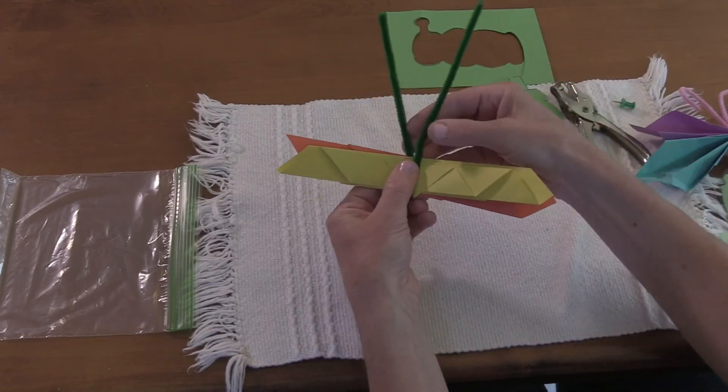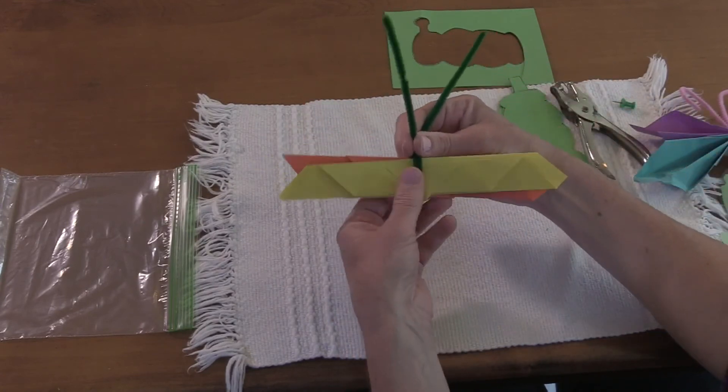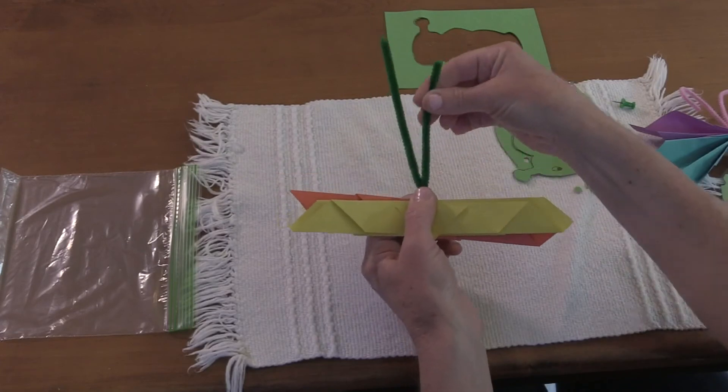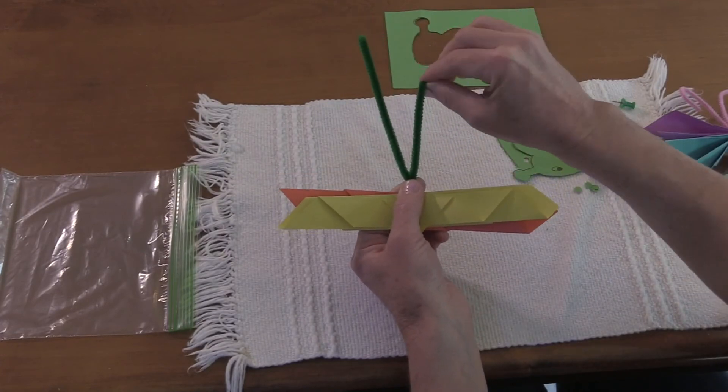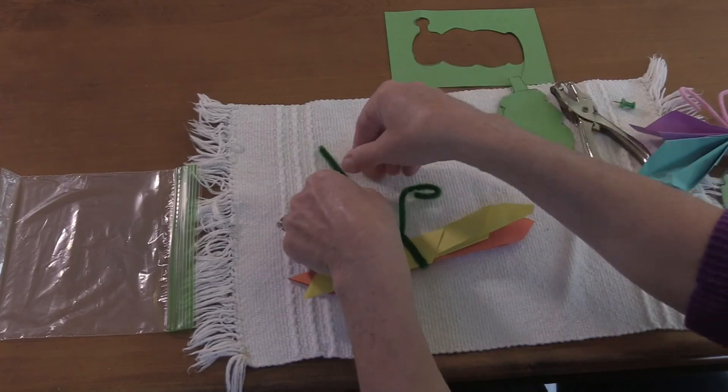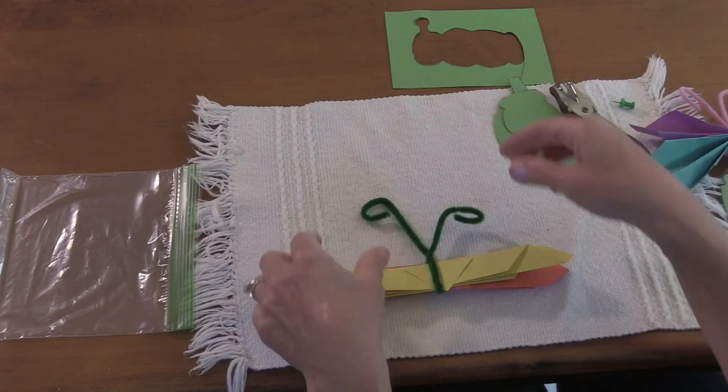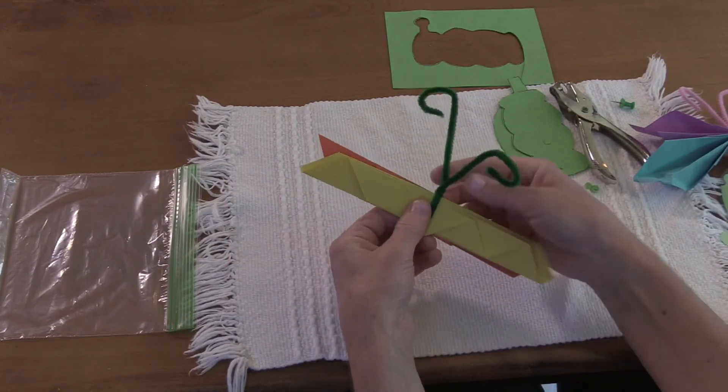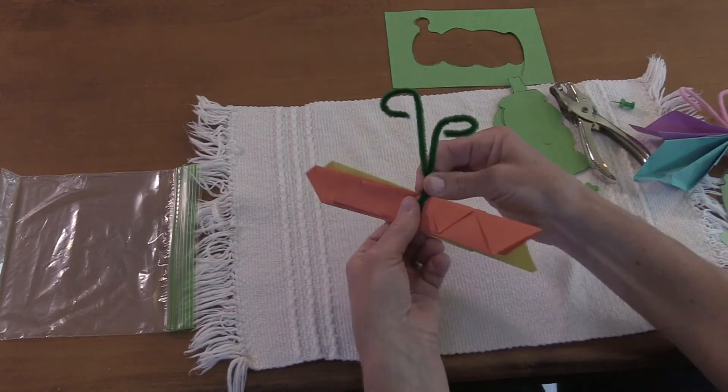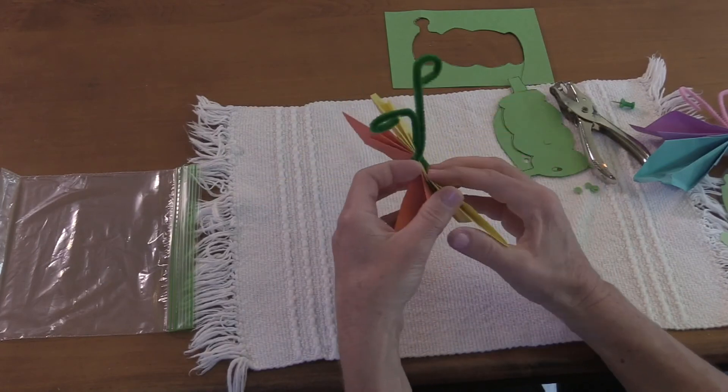I'm going to twist it two times so it stays tight and then I'm going to make my antennas. Twist the antennas. The antennas twirl around like this, they're kind of like a curly cue. Pipe cleaners are fun, they can twist how you want them to. Make sure this is tight and then open my butterfly's wings.